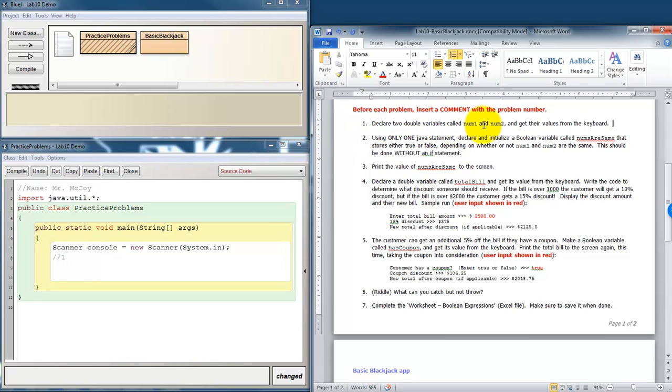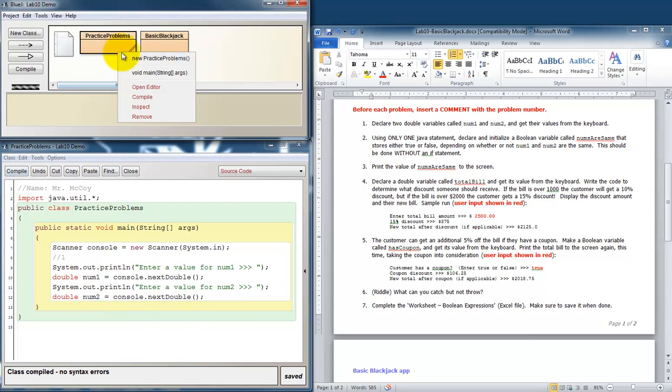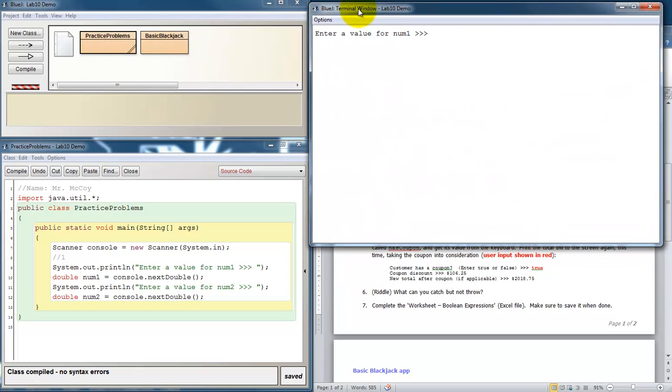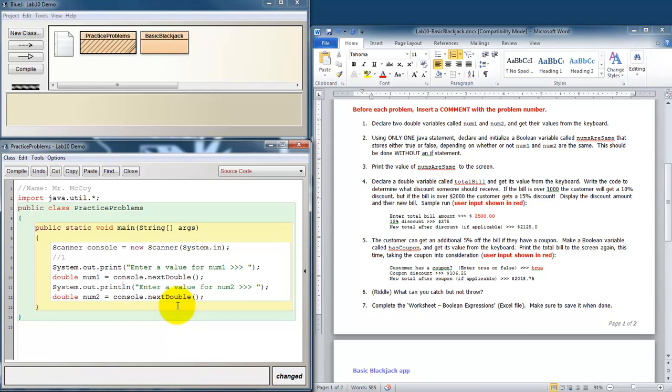We need to declare two double variables called num1 and num2. Get their values from the keyboard. Well, nothing too exciting there. We need a prompt. System.out.println. Enter a value for num1. And we need to declare a new double called num1 where we'll store that information and use console.next double to get it from the user. And then I need to do the same thing for num2. And I can just copy and paste that. Change num1 to num2. And compile. Let's check it out and make sure it's working. Num1. 23. 45. Okay. Now, I don't like that it's not entering on the same line. I should have used print rather than print line.